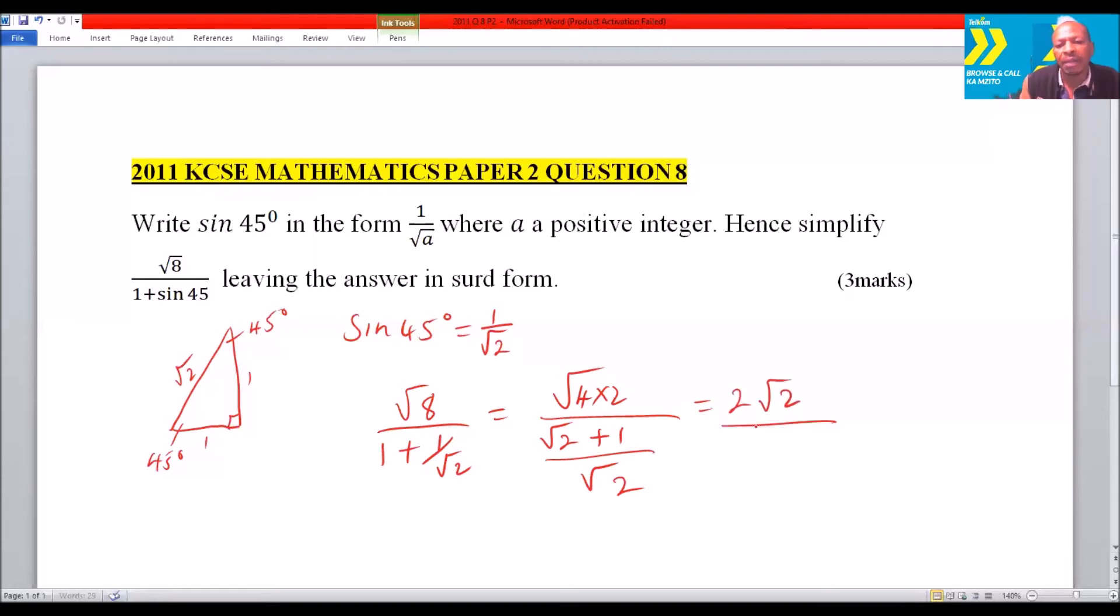When you divide it, it will be √2 + 1, and then you multiply by √2. Now once you multiply that, you'll be able to get 2√2 multiply by √2, that will be 4.